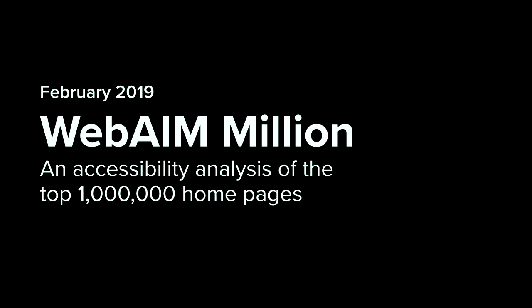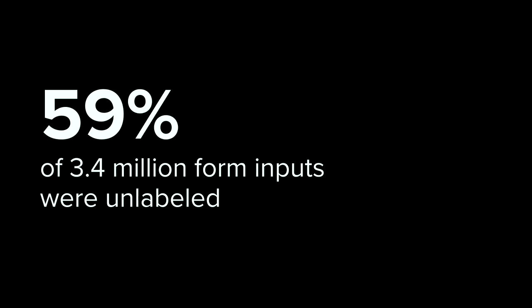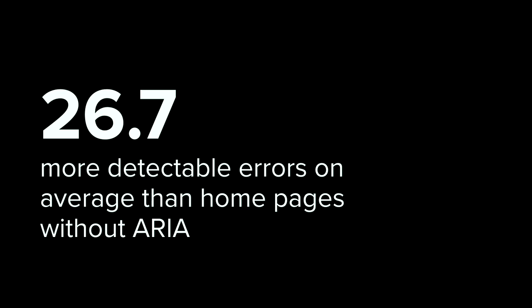So now we have the standards and principles to follow, and yet — in February, WebAIM conducted an automated accessibility analysis of the top one million homepages, and the results were pretty depressing. 97.8% of homepages had detectable WCAG 2 failures. 59% of form inputs — 3.4 million form inputs — were unlabeled. 60.1% of those one million pages had ARIA present, and of those pages, there were 26.7 more detectable errors on average than homepages that did not use ARIA.